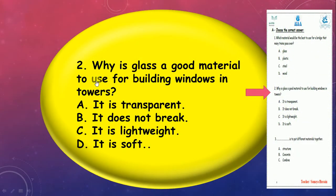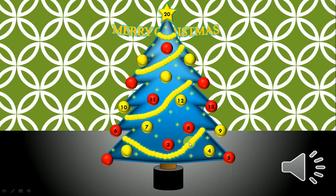Number 2: Why is glass a good material to use for building windows in towers? What do you think? Why do I use glass? It's transparent, or it doesn't break, or it's lightweight, or it's soft? Yeah, super, transparent! Super.